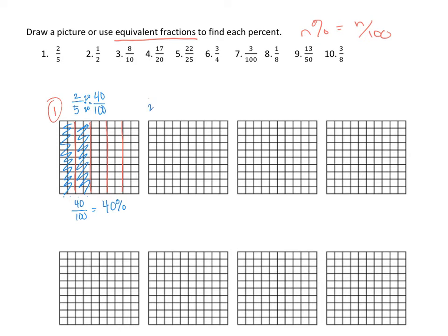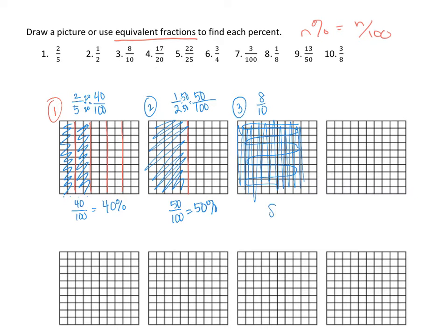For number 2, we're looking at a half. If I just split this in half, you can see that's 50 hundredths, which would be 50%. Or we could take that fraction and write it out of 100 by multiplying by 50. For number 3, we're looking at 8 tenths. That's already broken up into tenths, so we want 8 of them — basically leaving 2 there. This covers up really 80 squares, so 80 out of 100, which is 80%.